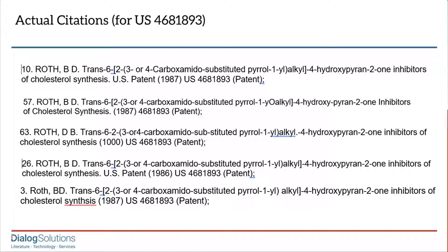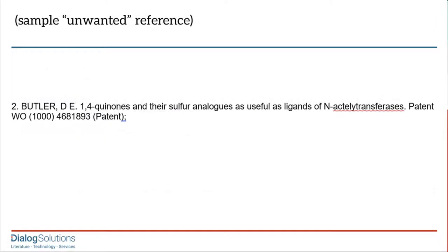The goal is to design a search in the RF field that will take this range of variations into account, while at the same time avoiding records that may share some part of your patent citation but are really something else. For example, one record refers to patent number 4681893, but not the US patent with that number, and it's on a different subject.